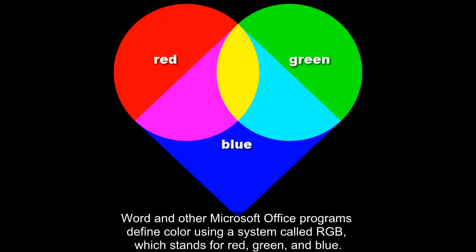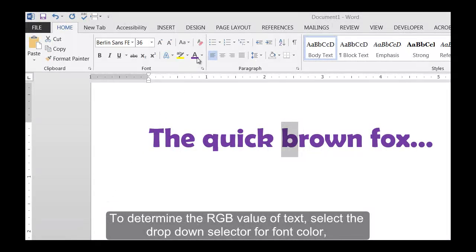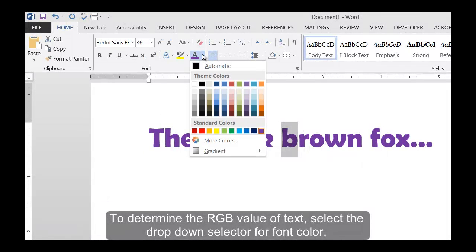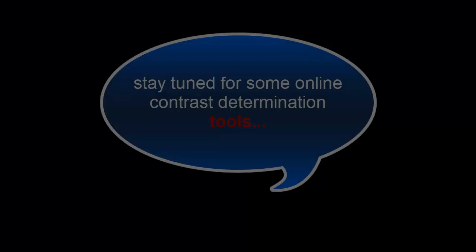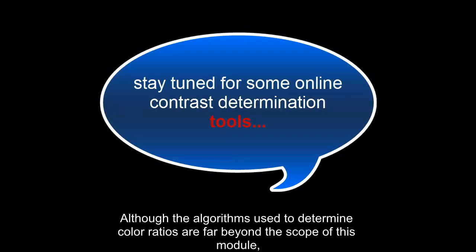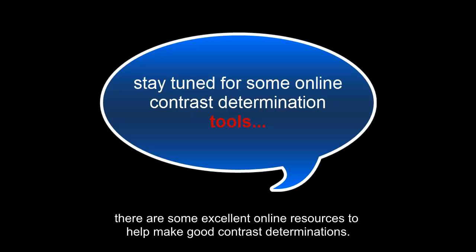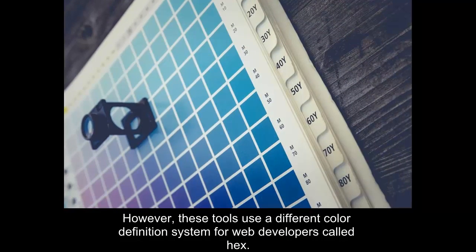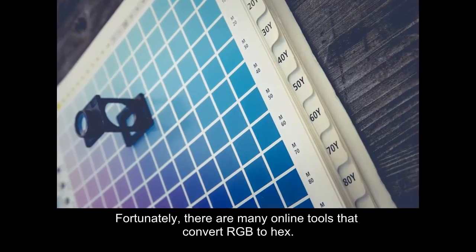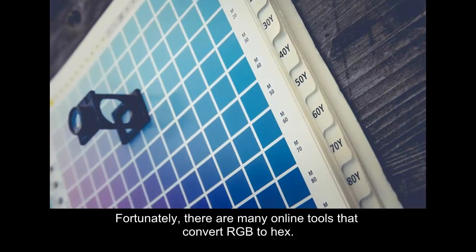Word and other Microsoft Office programs define color using a system called RGB, which stands for red, green, and blue. To determine the RGB value of text, select the drop-down selector for font color, then select more colors, then go to the custom tab. Although the algorithms used to determine color ratios are far beyond the scope of this module, there are excellent online resources to help. However, these tools use a different color definition system for web developers called HEX. Fortunately, there are many online tools that convert RGB to HEX.